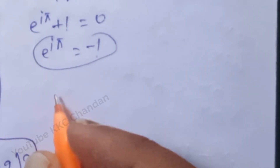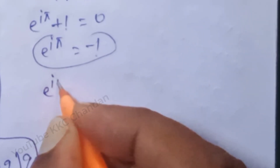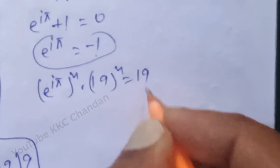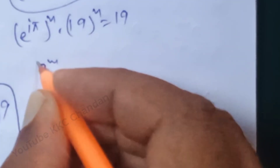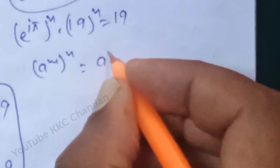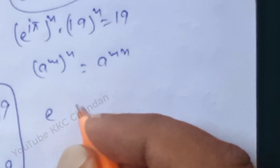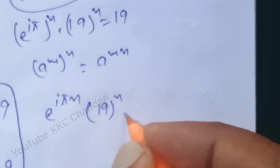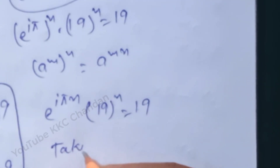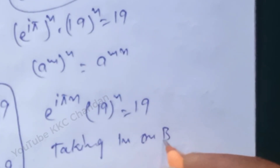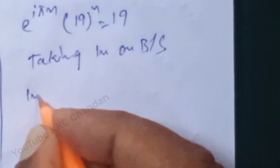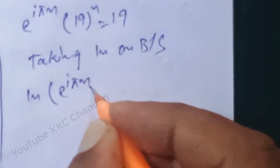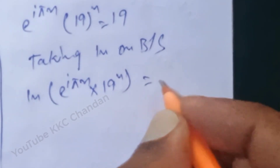See here the next step: e^(iπ×n) × 19^n is equal to 19. Taking ln on both sides, we get ln(e^(iπn) × 19^n) is equal to ln(19).